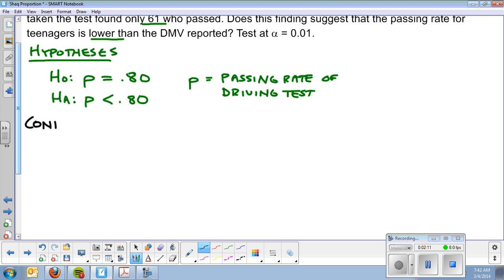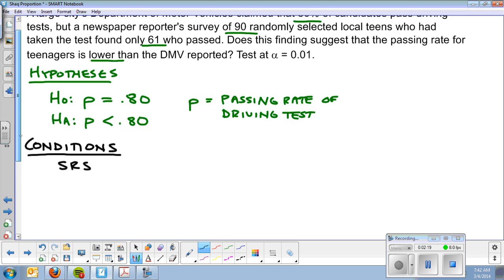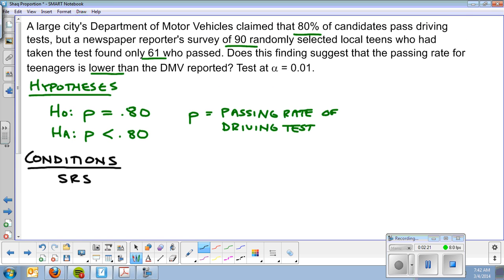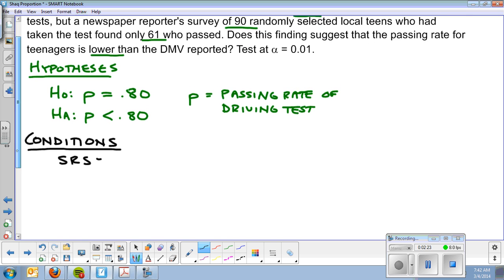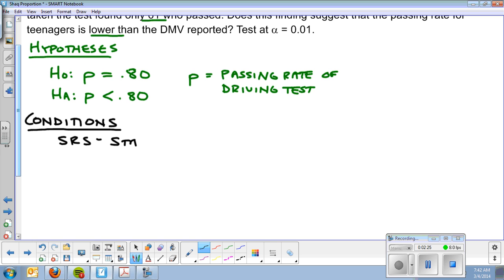Second step, we check the conditions. The first one's the same, SRS. It says randomly selected in the problem. So that is stated in the problem. And again, we ho-hum over it, but it's really important in accurate data. I don't want any bias in my sample, and then my numbers are no good.